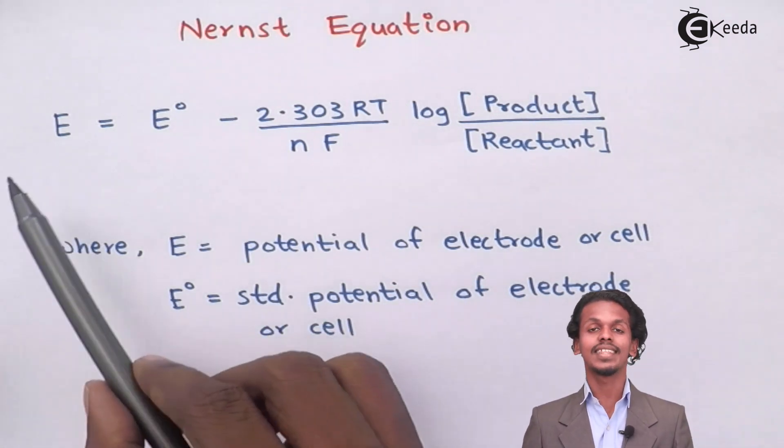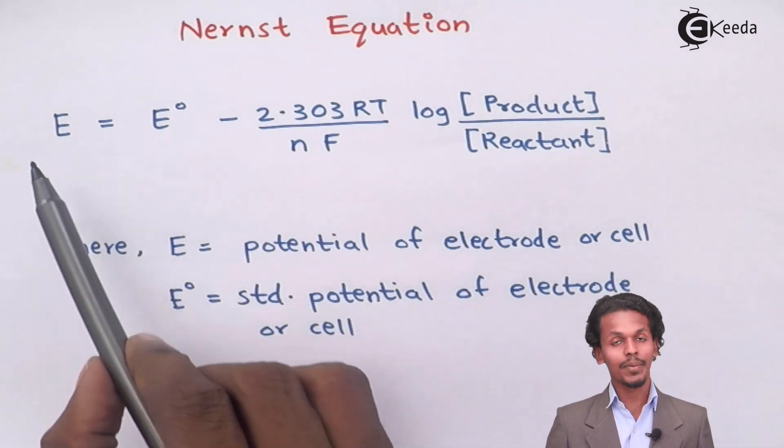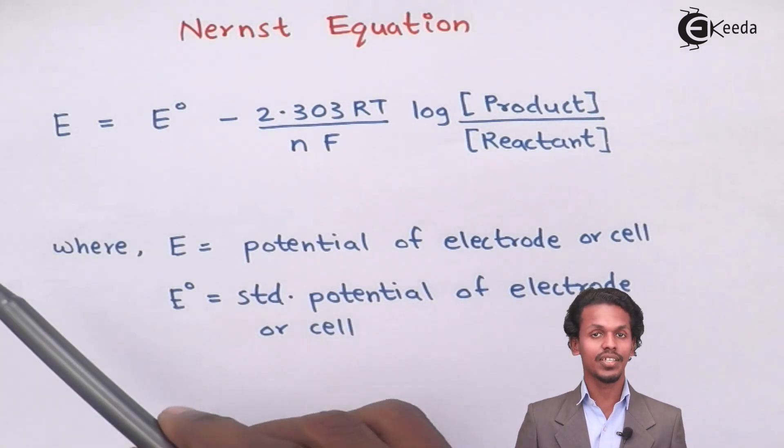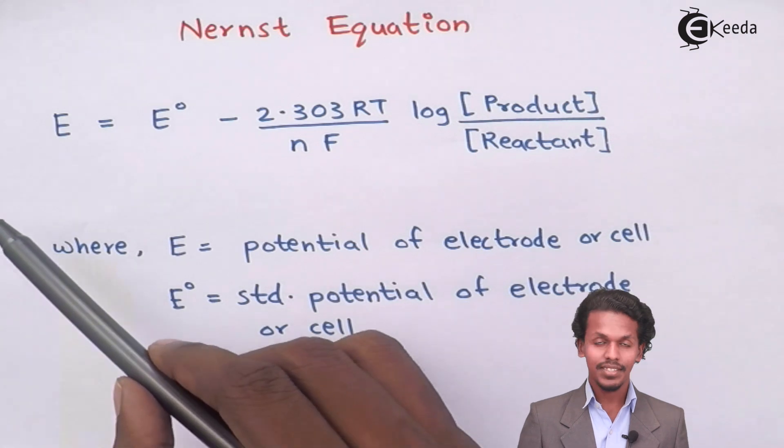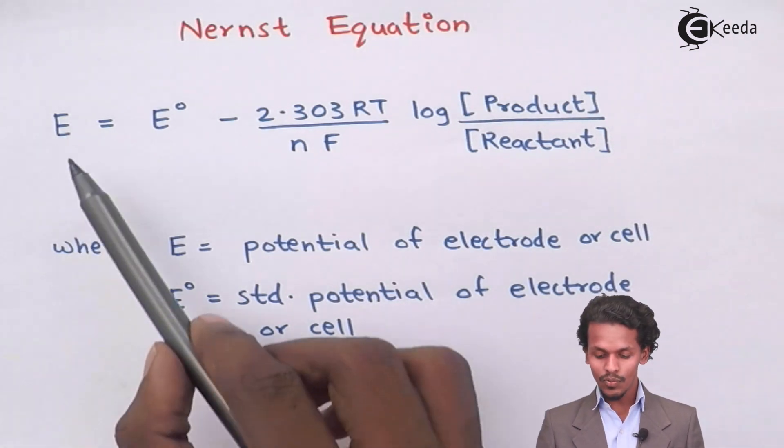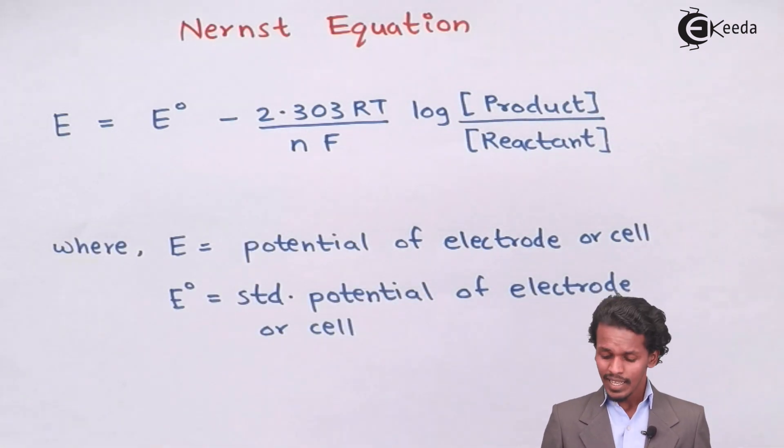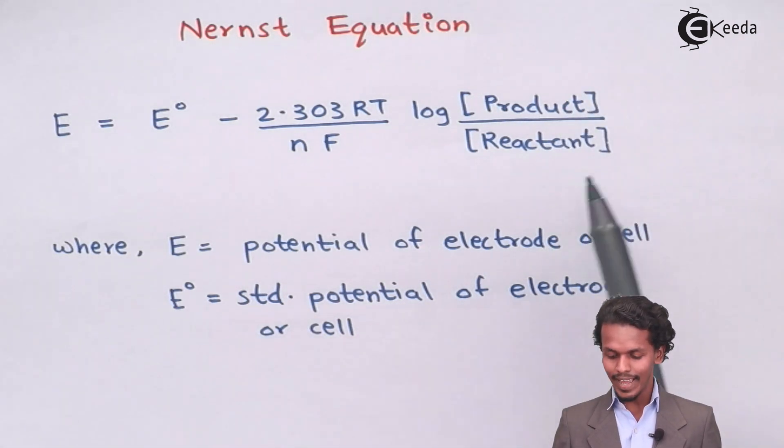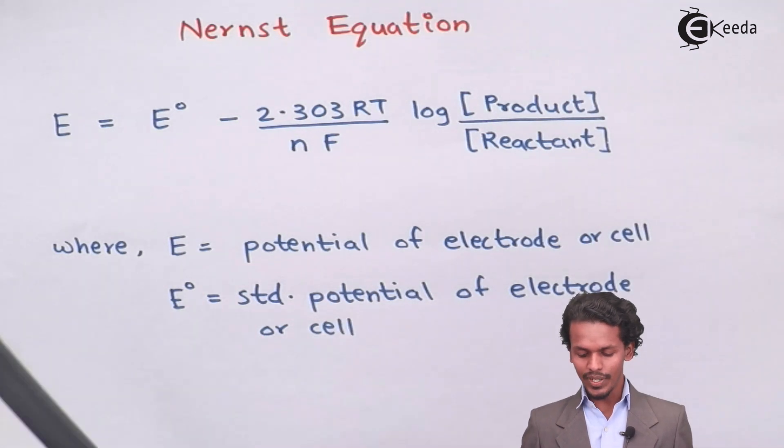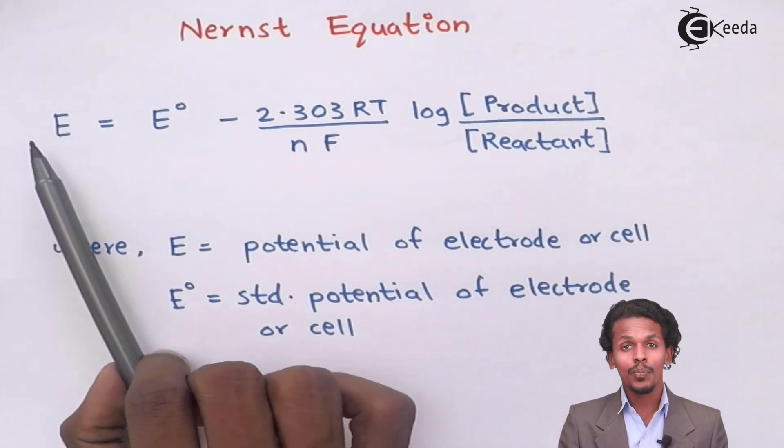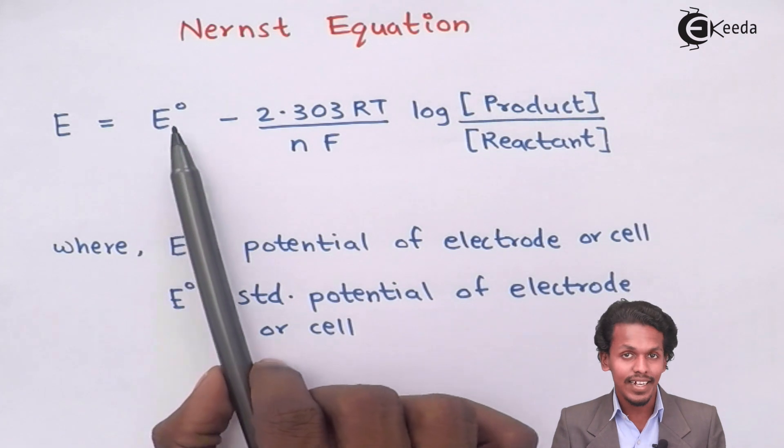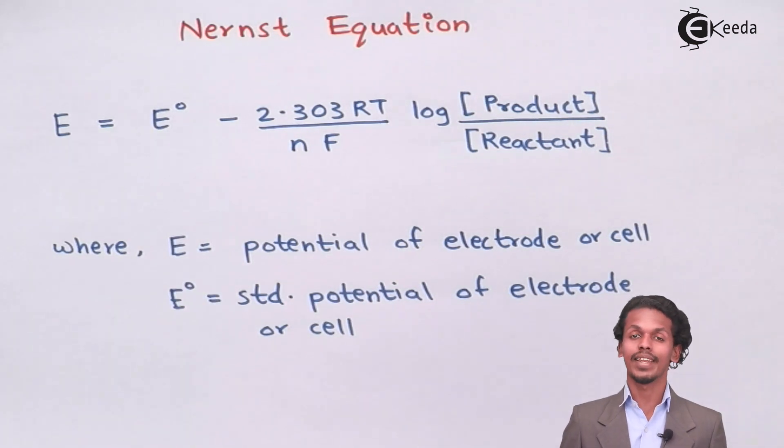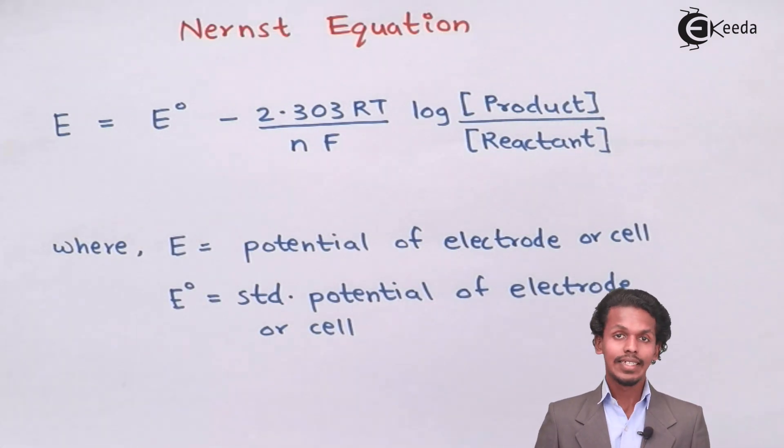If I represent just by E, then it would be E of a particular electrode like suppose Ag or manganese. So this would be the electrode potential of that particular electrode. This is how this has given a relation between the electrode potential and the standard electrode potential of a particular electrode or a particular cell.